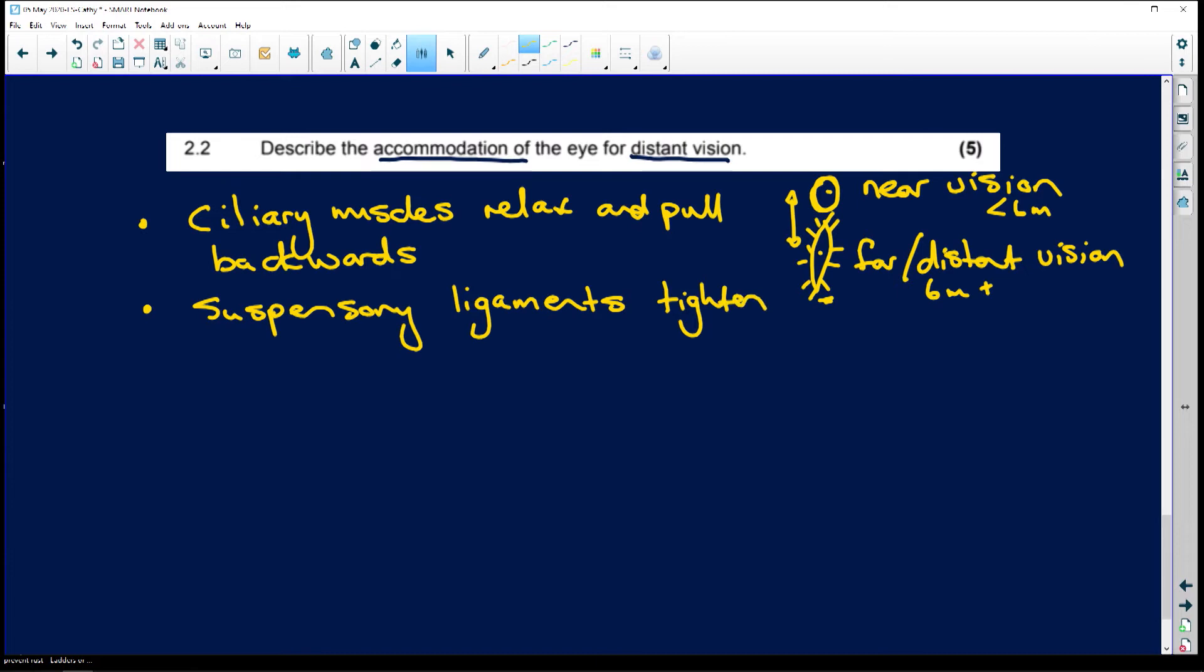Or you can say they become taut. Taut means tight. OK? What happens then?